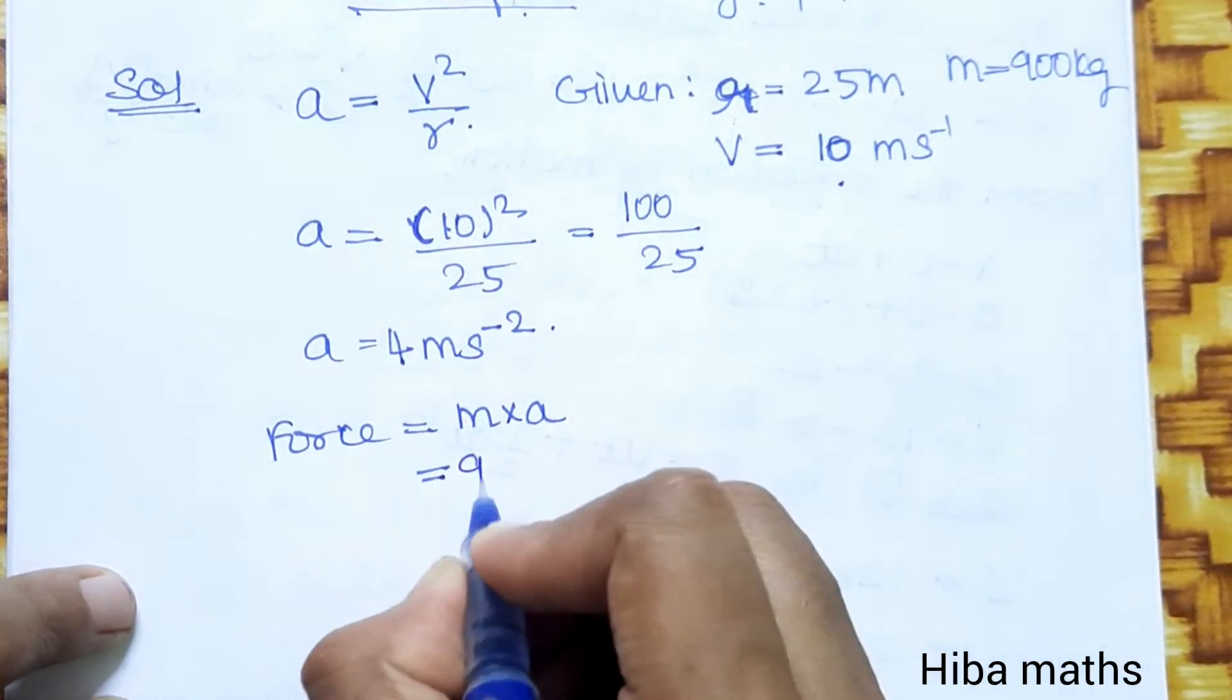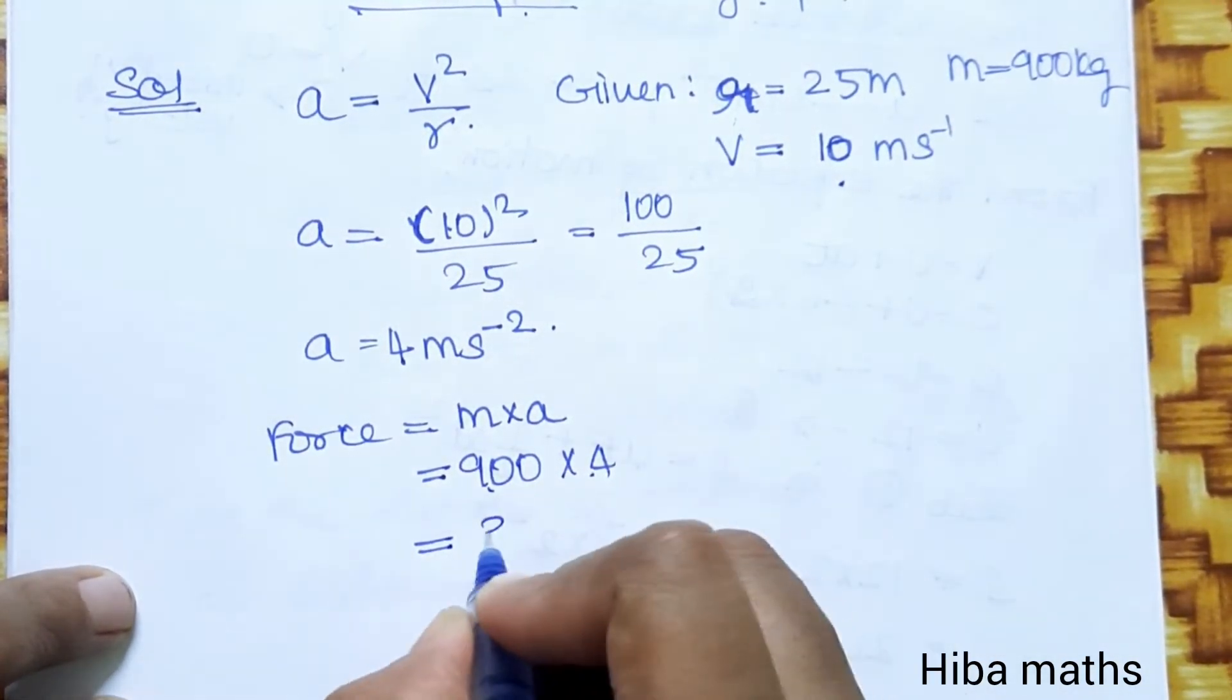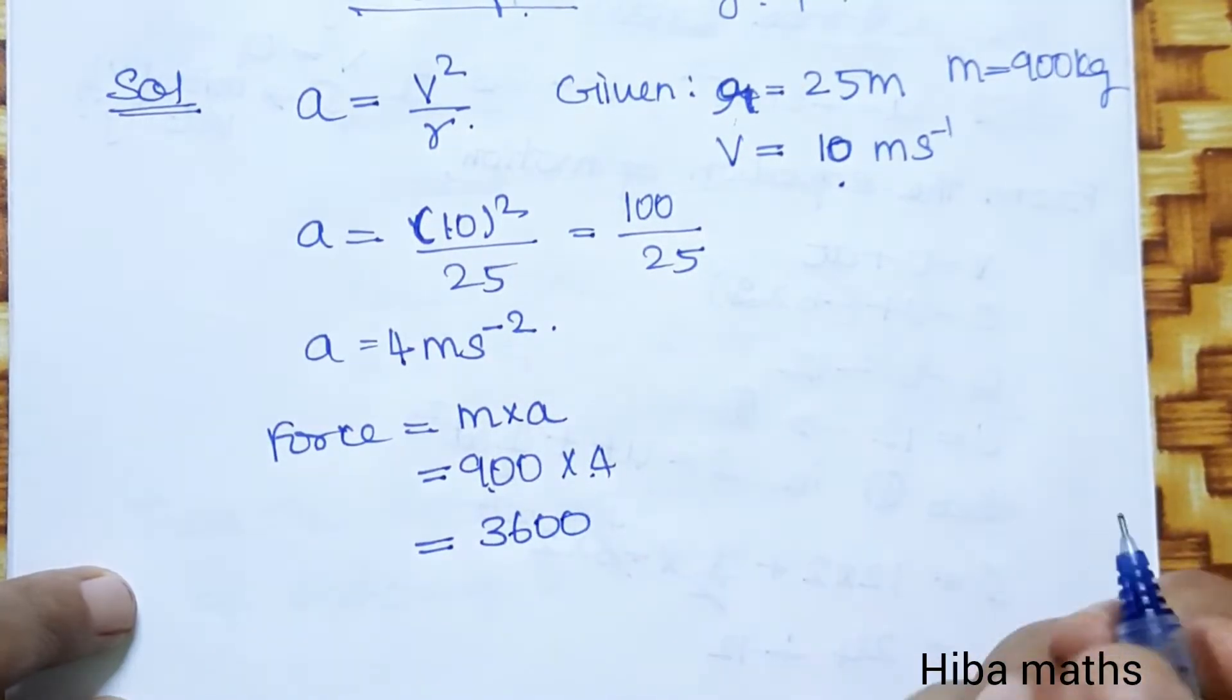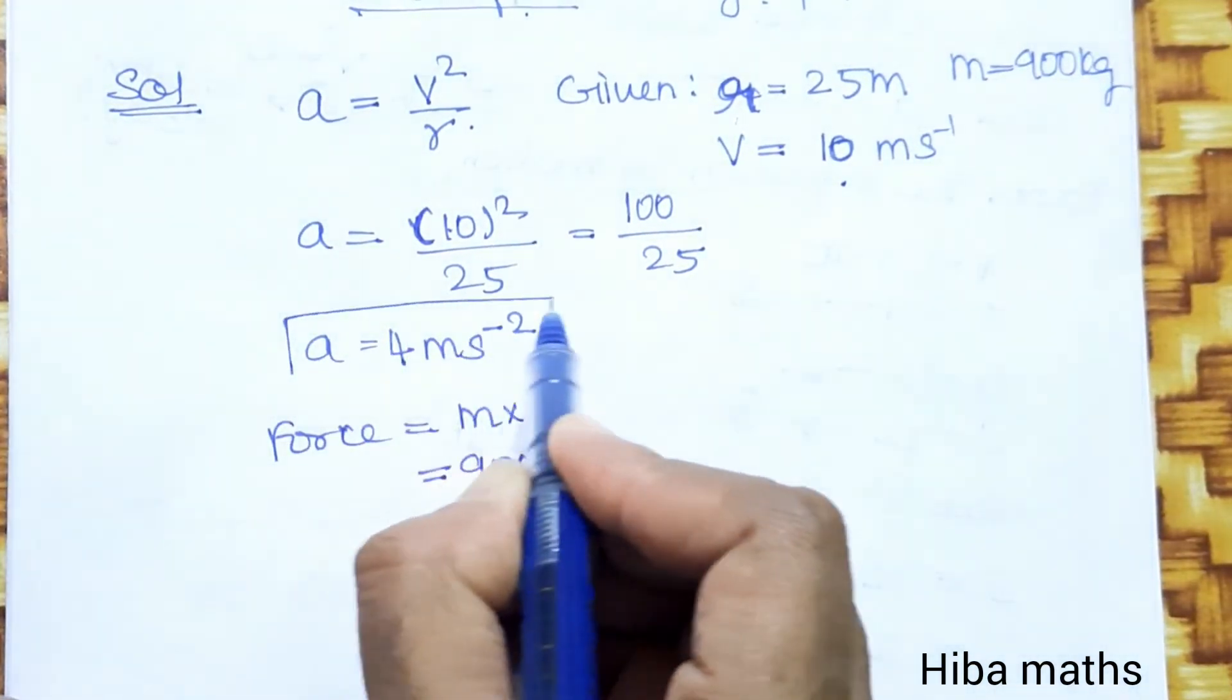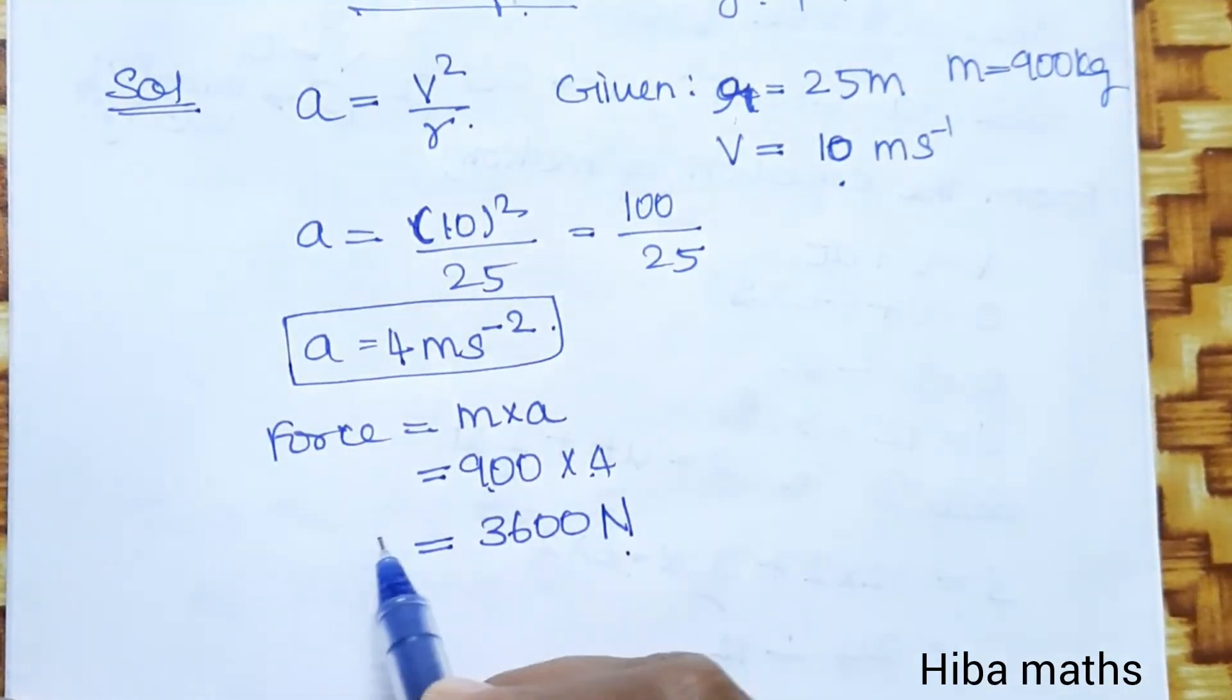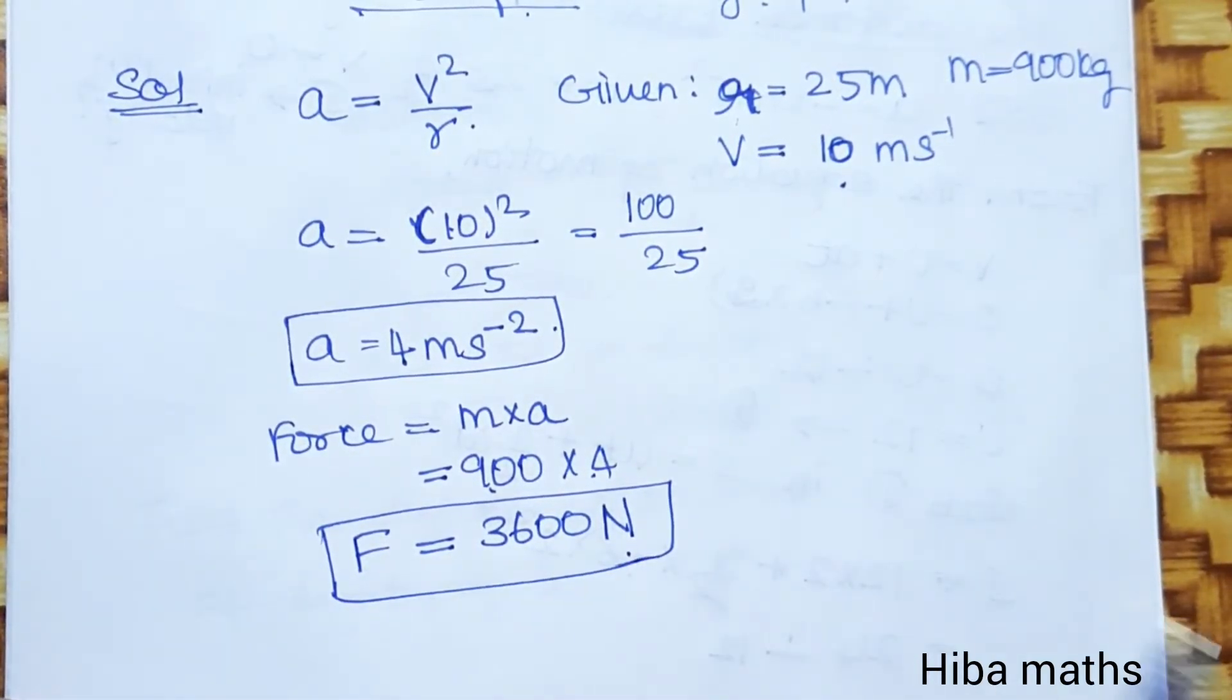Force is equal to 900 into 4. That gives us 3600. Force is equal to 3600 Newtons. So we have two answers: first, acceleration is equal to 4 m/s², and force is equal to 3600 N.